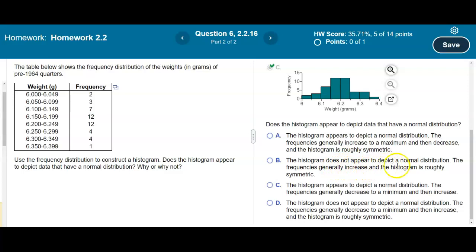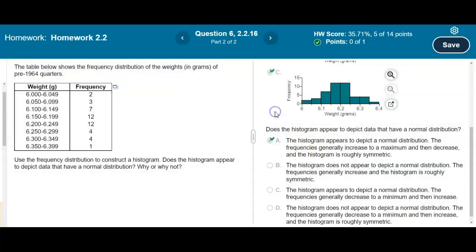Option B says the histogram does not appear to depict a normal distribution, so we can eliminate B. Option C says the histogram appears to depict a normal distribution, but that the frequencies decrease to a minimum and then increase. That's not true because the frequencies start low. Option D says the histogram does not appear to be a normal distribution, but that's not true because it looks like a bell curve. Our best choice is A. That is our answer.